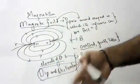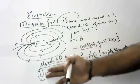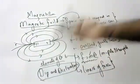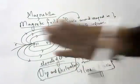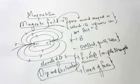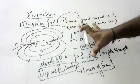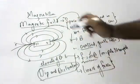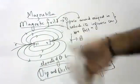Dip is measured by a dip circle. The definition of dip and declination you will study in second year; it is not there for 10th class. But if you want, we can discuss it separately. For now, the definition of magnetic field is the most important thing.